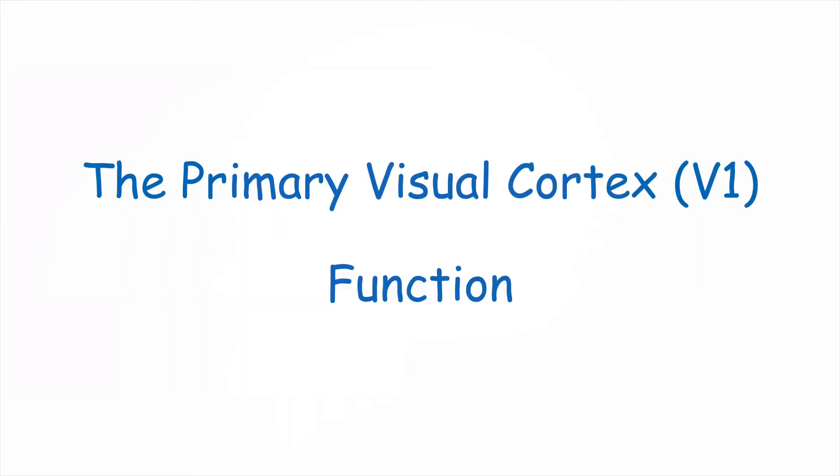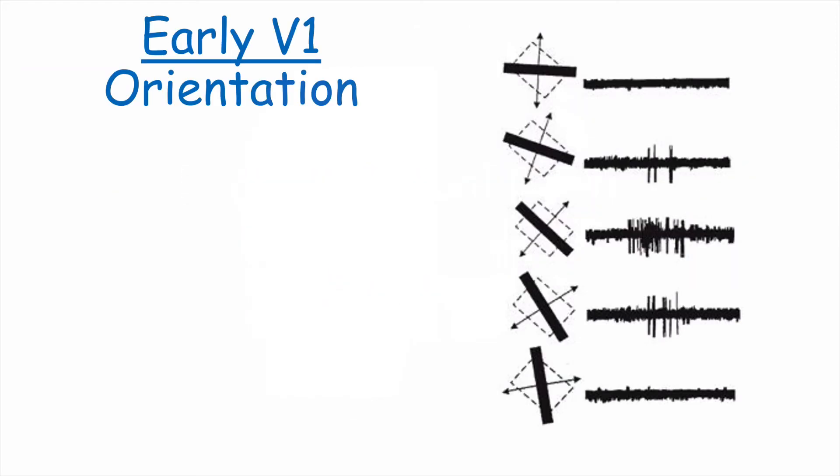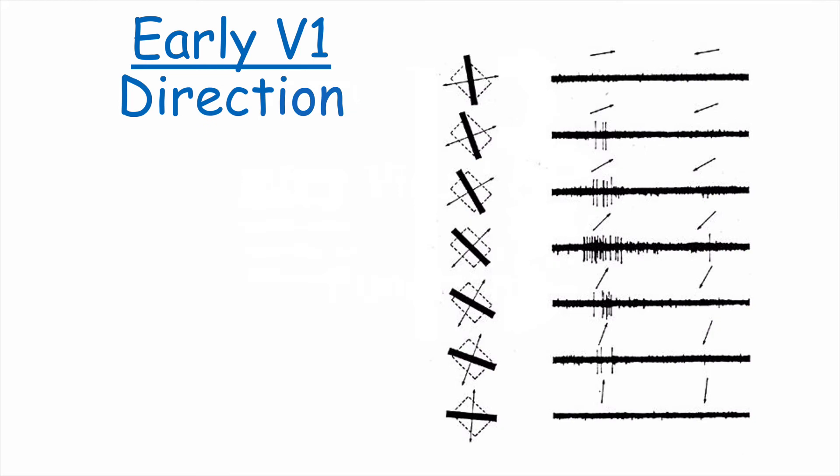The primary visual cortex - function. Neurons in the primary visual cortex encode low-level visual information. For example, here's a neuron that encodes the orientation of a given stimulus in the visual display. Other neurons in the primary visual cortex are sensitive to the direction that a given stimulus is moving.